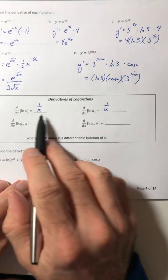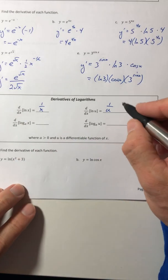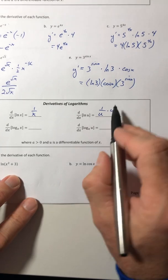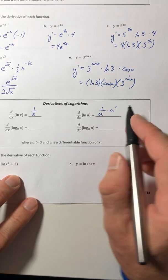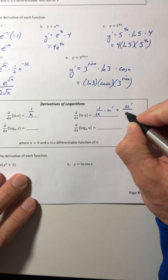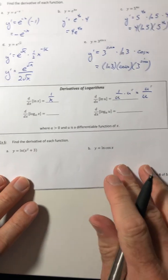It's going to be one over u, just like it was before, but then you have to multiply by u prime. That's where the chain rule kind of comes in, is that u prime. So it's really u prime over u.